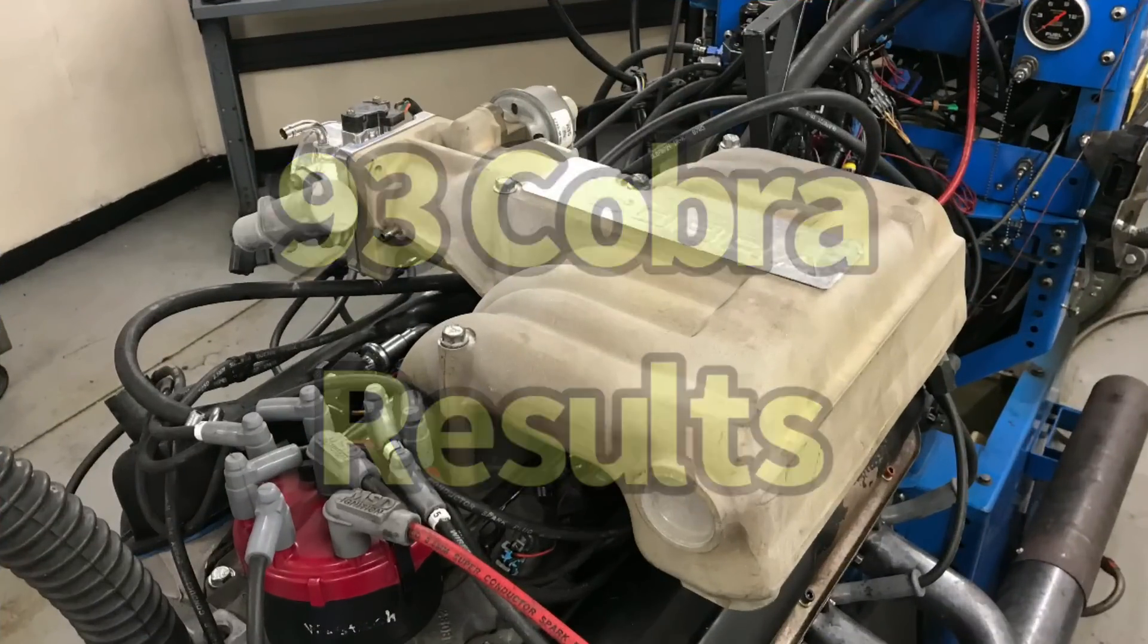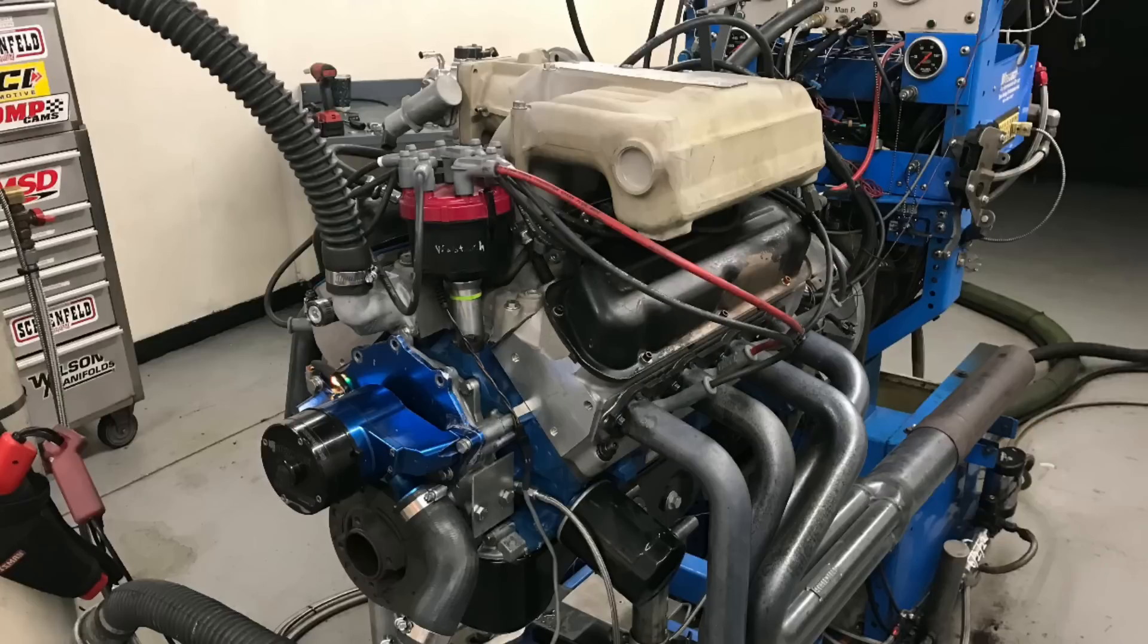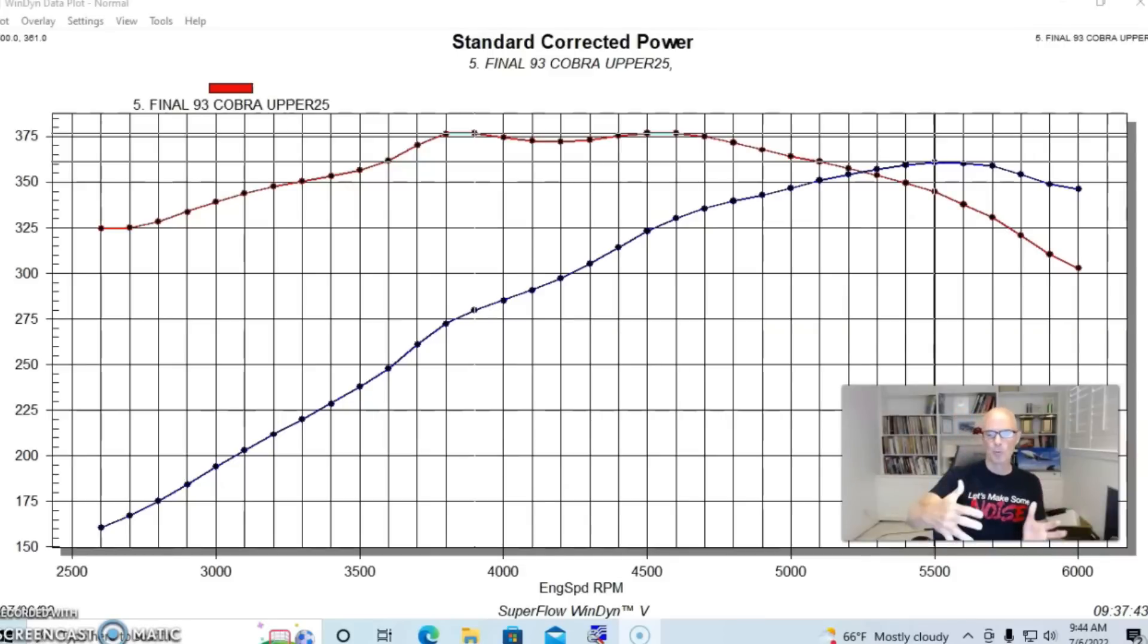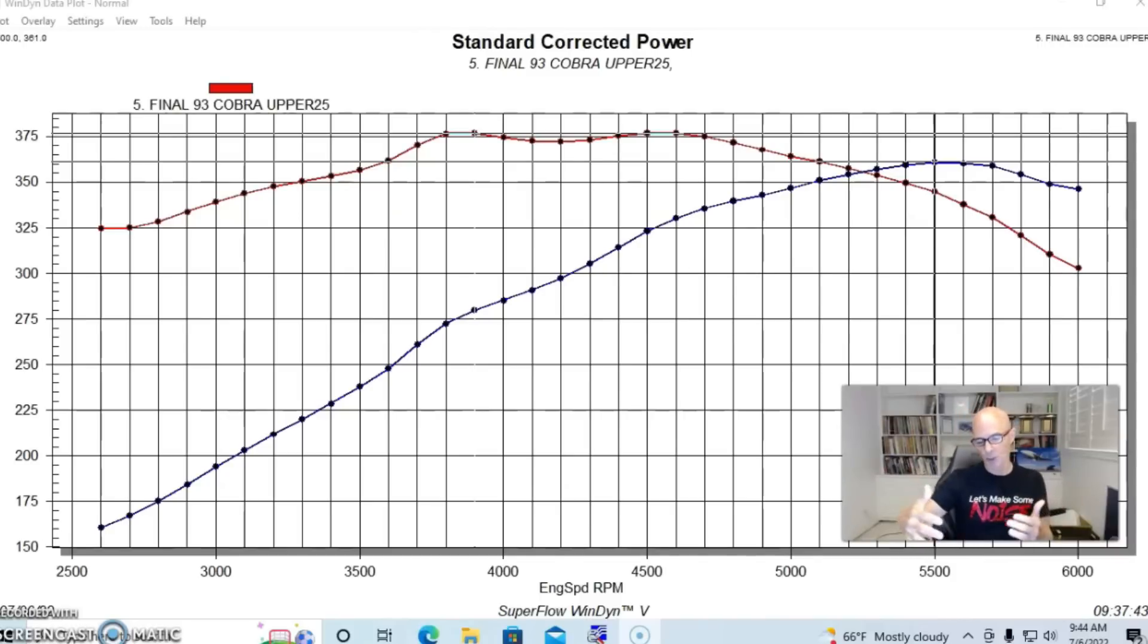Next up was the aluminum version or the Cobra upper intake manifold, basically the aluminum version of the GT40. This was a production-based piece run on the 93 Cobra and Cobra R versions, as I said. Basically an aluminum version cast of the GT40. And we also ran this with the same 65 millimeter AccuFab throttle body. And given its production unit and its similarity to the tubular GT40, not surprisingly, it made very, very similar power.